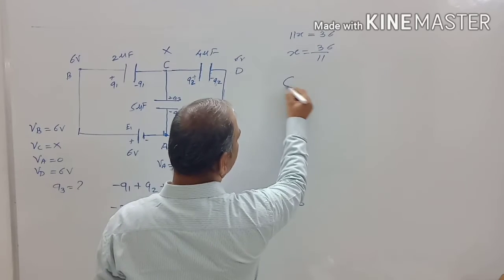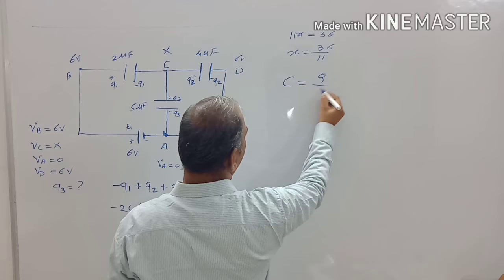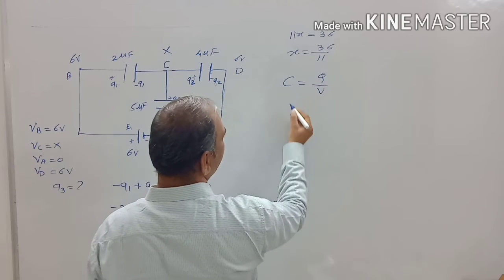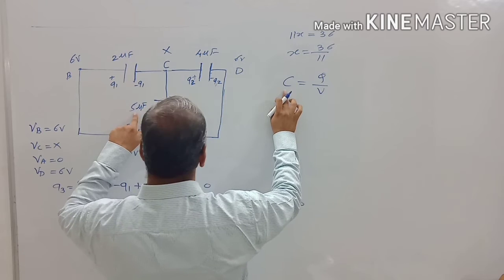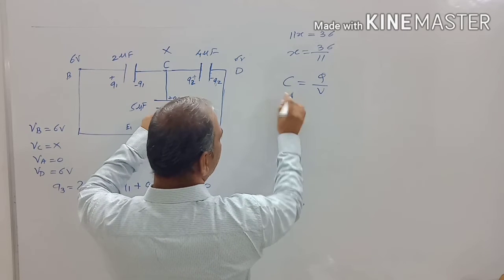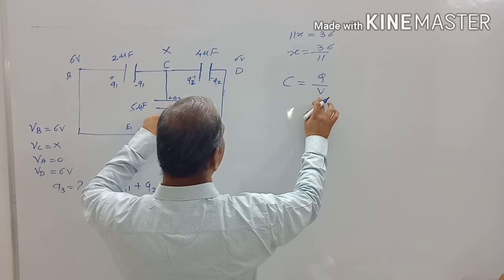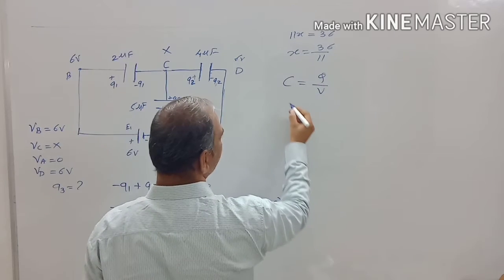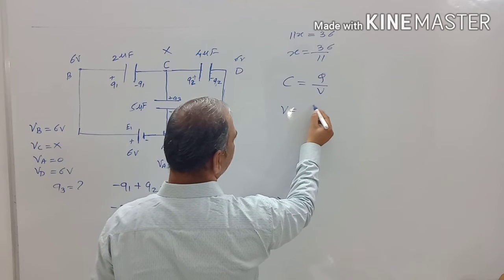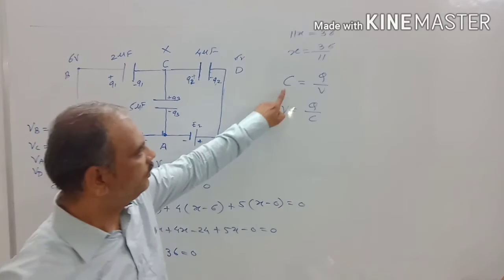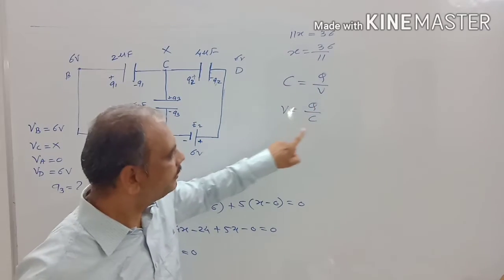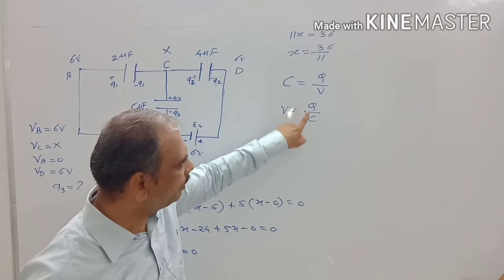We know that capacity is equal to charge upon potential. So here, capacity of third condenser is 5 microfarad, charge is nothing but Q3, and potential is nothing but X. C is equal to Q upon V. Therefore, V is equal to Q upon C.